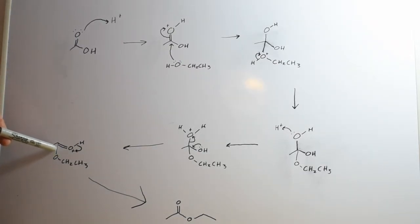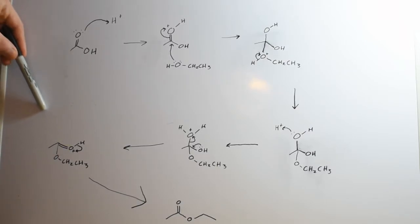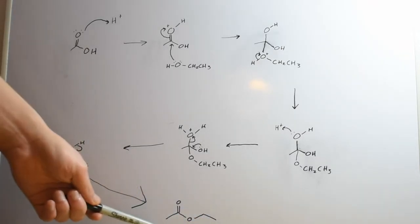Once the double bond has formed, the electrons from this hydrogen oxygen bond go to satisfy the charge on this oxygen and what you end up with, if you look at it from this angle, is a different molecule which is our ethyl acetate or our ester.